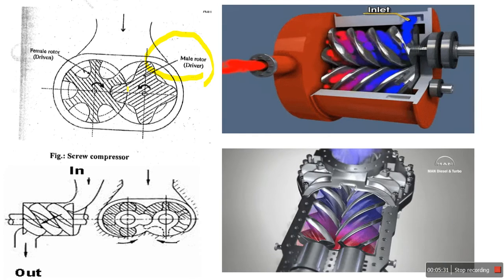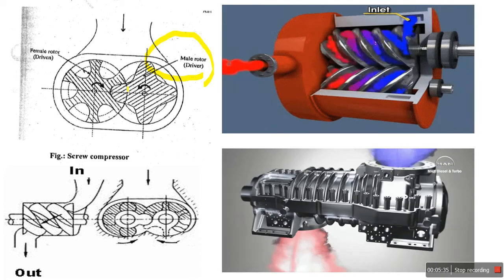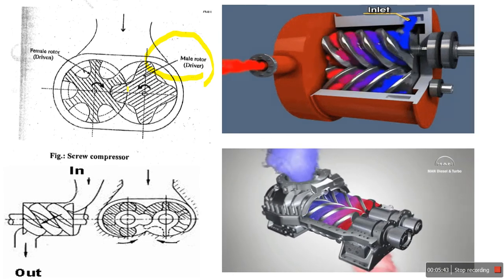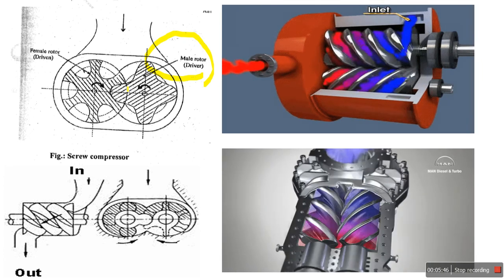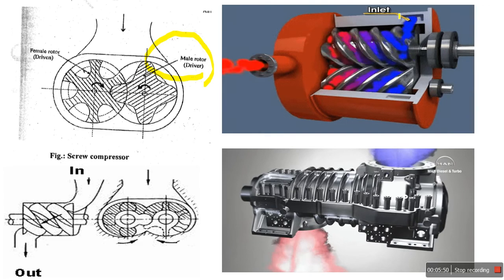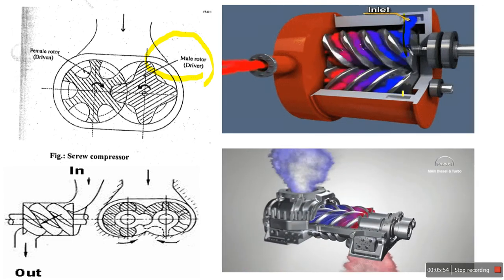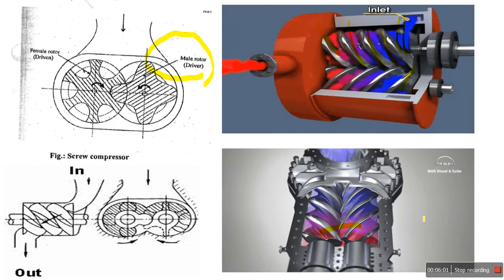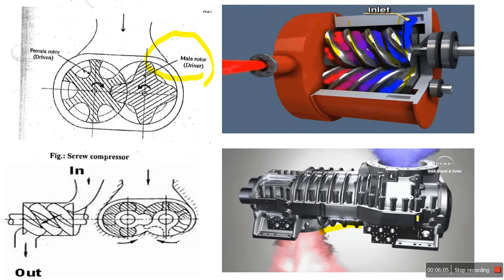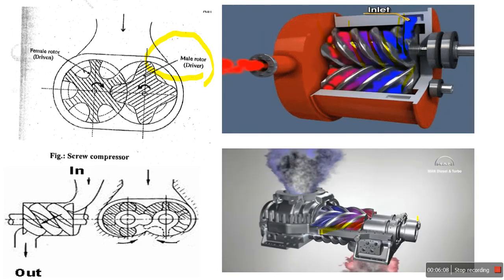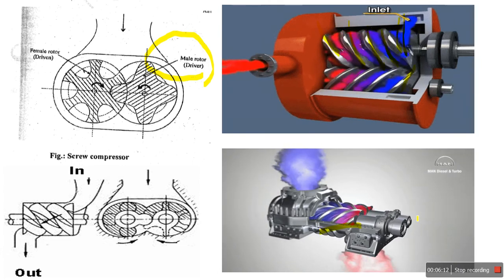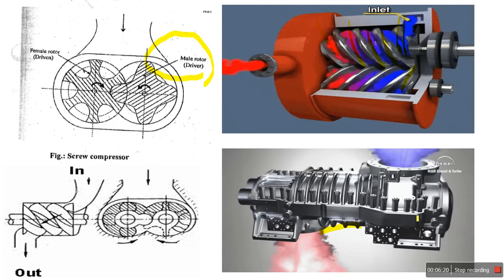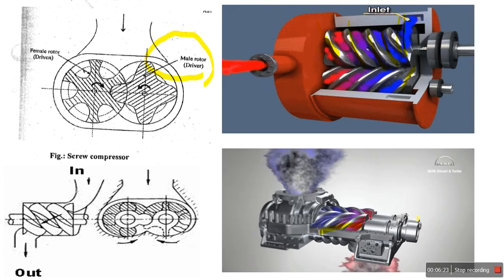During compression, further rotation causes the meshing of another male lobe with the female interlobe space on the suction end, progressively compressing the air in the direction of the discharge. The inlet air enters the chamber and starts to squeeze — that is the key principle of the screw compressor: squeezing of air progressively and continuously. At the discharge point, the discharge port is uncovered and the compressed air is discharged by further meshing of the lobe and interlobe space.